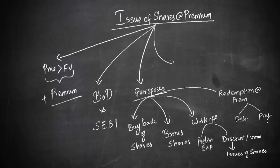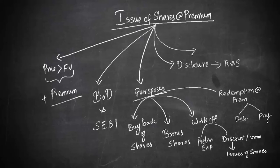How will this share premium be disclosed in the balance sheet? In the balance sheet, this will be shown as a liability under the head reserves and surplus. Whether the share premium can be used for payment as dividend — the answer is no. This is not available for declaration or distribution as dividend. You cannot use this share premium for paying as dividend.